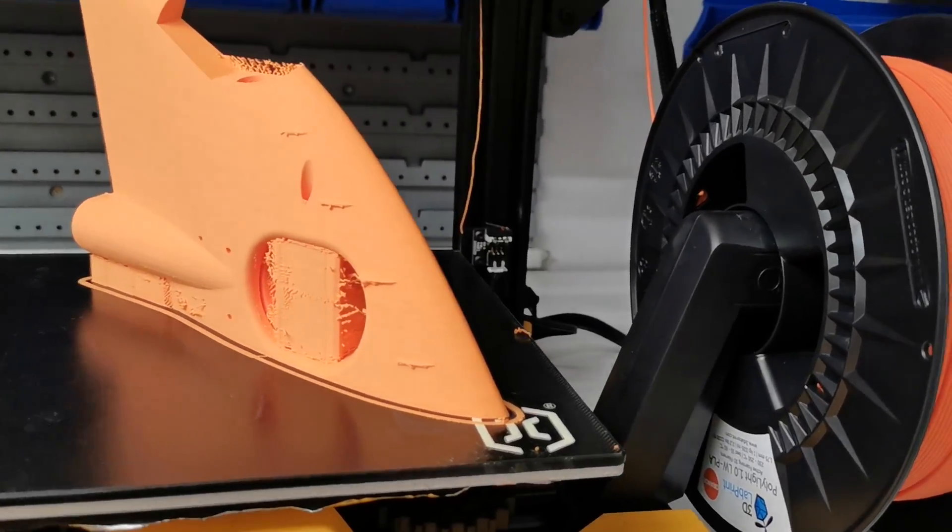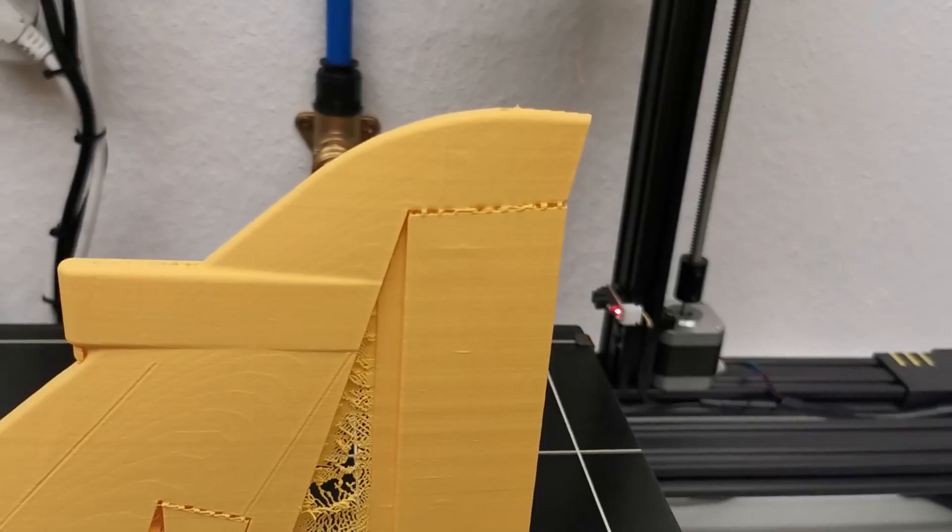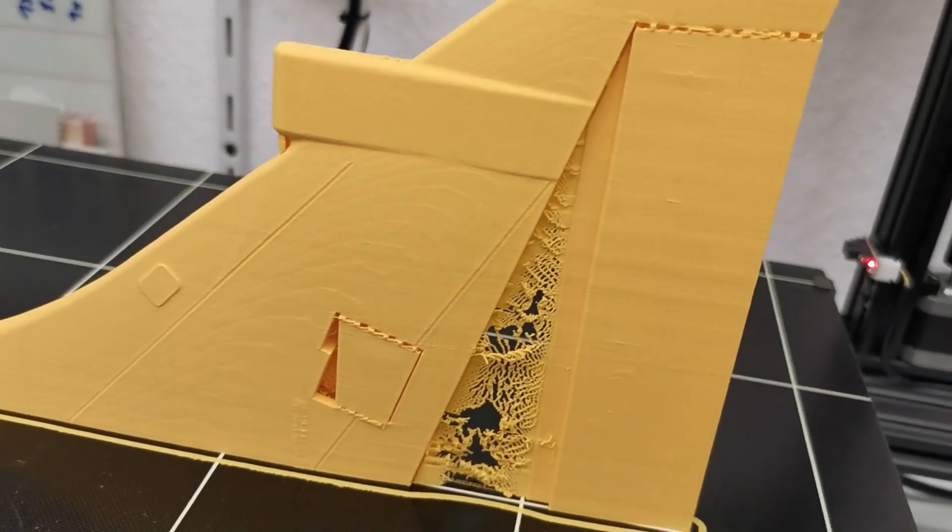These are the new wingtips and we also did a lot of upgrades on the vertical stabilizer. It got a bigger rudder and also carbon rod reinforcement.